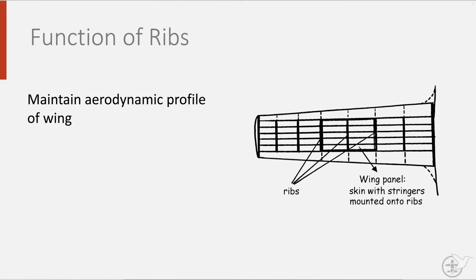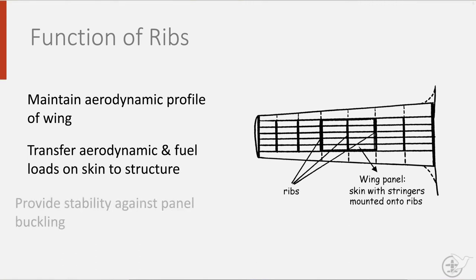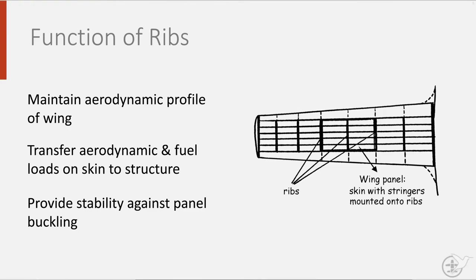As an aerodynamic profile is defined in flight direction, ribs are often placed in flight direction also, even though sometimes it is easier from a manufacturing point of view to place them perpendicular to the spars. Secondly, they also transfer the aerodynamic and fuel load exerted on the skin into the rest of the wing structure. Next to that, they also provide stability against panel buckling of the skin panels.